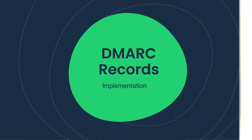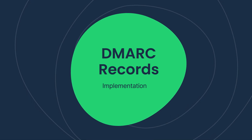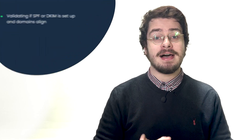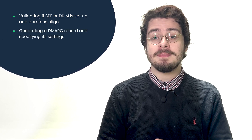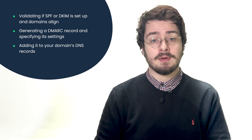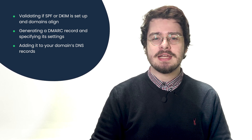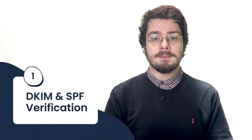It is important to understand the purpose of each tag to correctly set your DMARC record. So let us see how exactly to set and implement your DMARC record. The whole process comes down to three steps: validating if SPF or DKIM is set up and the domains align, generating a DMARC record and specifying its settings, and adding it to a domain's DNS records. First, verify if DKIM or SPF are set up properly. Having either of them is vital for DMARC to work, but having one that returns negative results for legitimate emails will do no good.